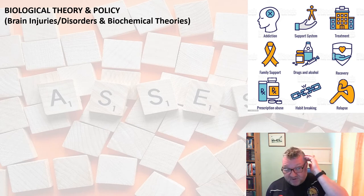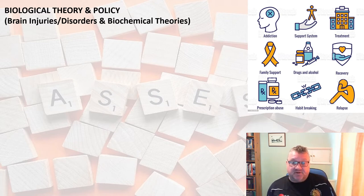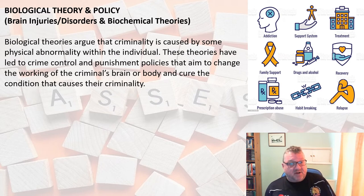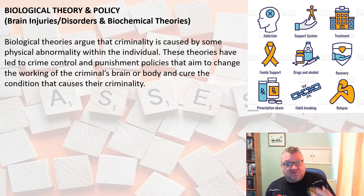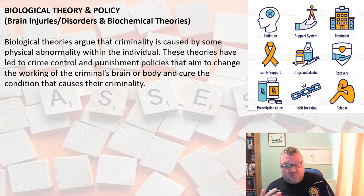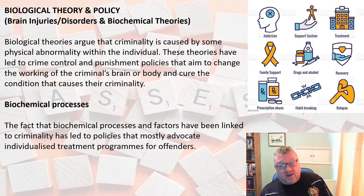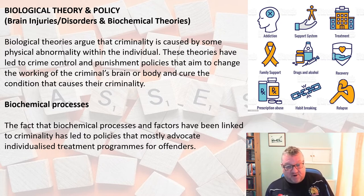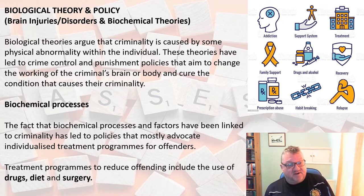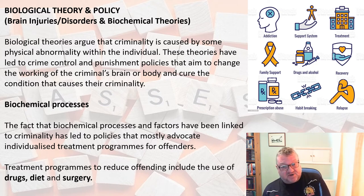Looking at brain injuries, disorders and biochemical theories, biological theories argue that criminality is caused by some physical abnormality within the individual. The aim is to change that abnormality by altering the working of the criminal's brain or body to cure the condition causing criminality. Biochemical factors linked to criminality have led to policies advocating individualised treatment programmes for offenders — any treatment reducing offending through drugs, diet or surgery is linked back to biological theory.